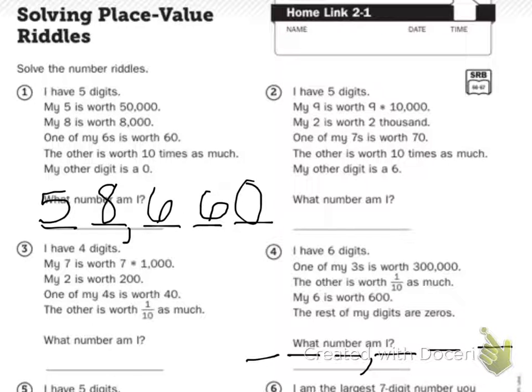One of my threes is worth 300,000. Ones, tens, hundreds, thousands, ten thousands, 100,000. Cross that off. My other is worth one-tenth as much. I'm not sure what that is, so I'm going to skip that for now. And then my six is worth 600. So ones, tens, hundreds. It's in my third line.